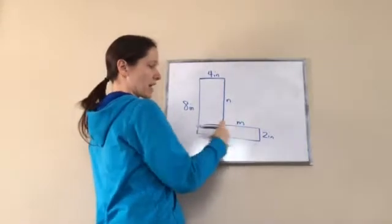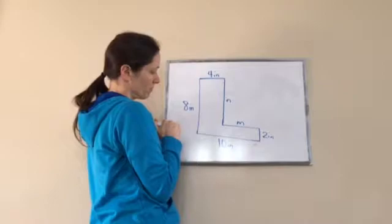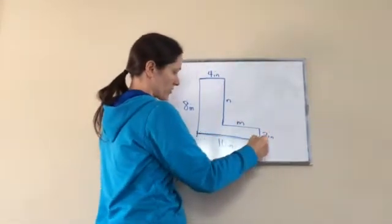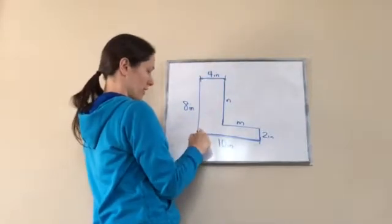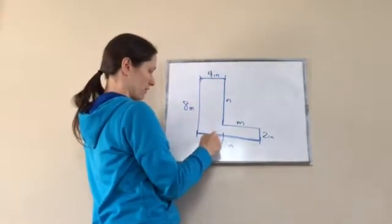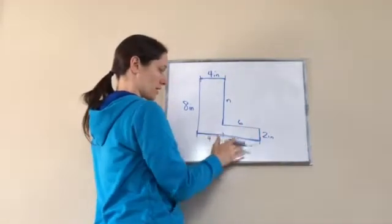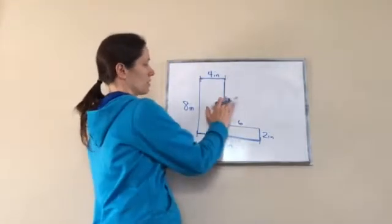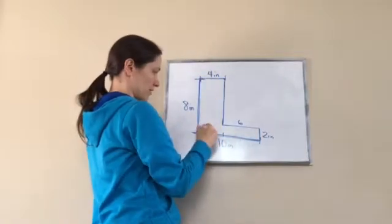So can I discover what m is? Yes. How? You... 10. From here all the way here's 10. From here to here's four. So from here to here would be... Six. Six, very good.